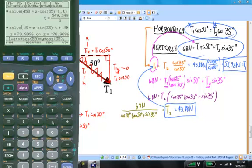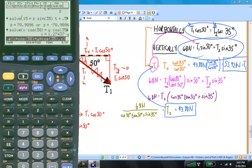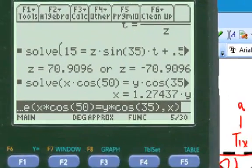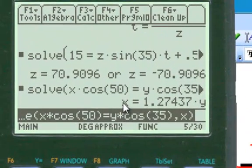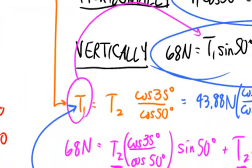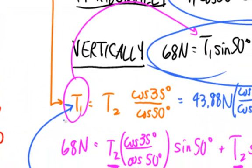I next type a comma and say, I want you to solve this equation for one of those variables. And as we did before, I'm going to let us solve for T1. So I'm going to say solve this equation for X. I close the parentheses. I hit the enter button. And now, I have an expression that says that X is equal to 1.27437 times Y. That's basically equivalent to the expression T1 is T2 times the cosine of 35 divided by the cosine of 50.